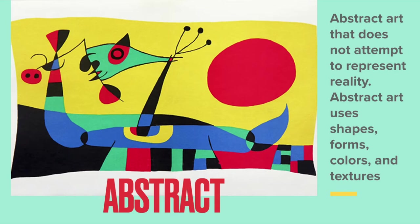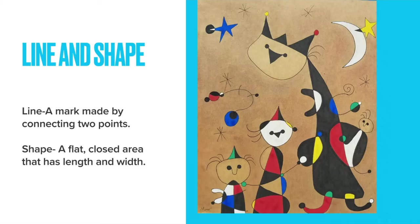Right here, to me it kind of looks like a little pig nose — and that's what we can do in our works today. We can draw ourselves in our images or we can draw something else. Line is a mark made by connecting two points; shape is a flat closed area with length and width. As we can see in all of his pieces, he has tons of different lines and shapes, so we can add random squares, moons, stars, and lines to our artwork.